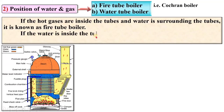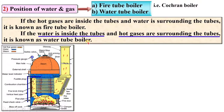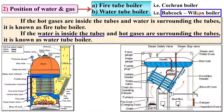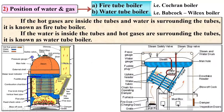If the water is inside the tubes and hot gases are surrounding the tubes, it is known as a water tube boiler — exactly opposite to the fire tube boiler. The example is the Babcock and Wilcox boiler, and here you can see inside the tubes there is water, that's why it is called a water tube boiler.